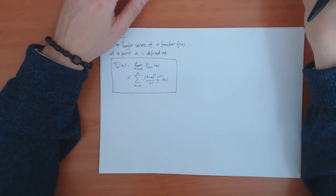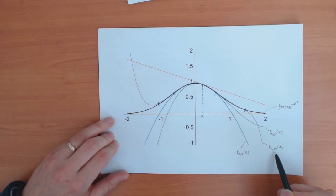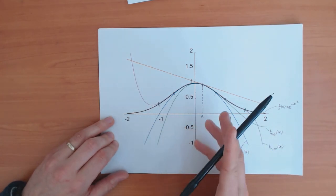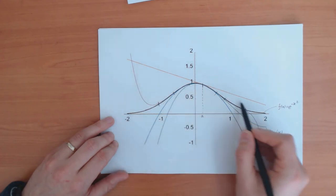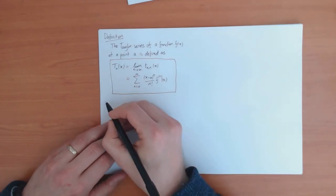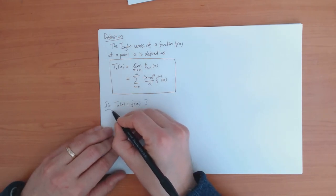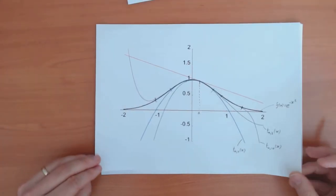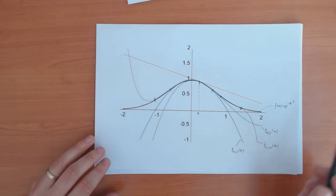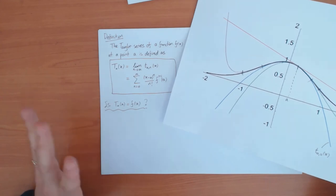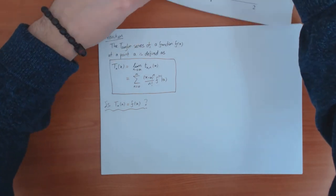Just before we finish, there's one final question I want to address. Looking at the graph, as I increase the degree of the polynomial the approximation to f gets better and better. So you can ask: in the Taylor series, in the limit that n goes to infinity, does the Taylor series become exactly equal to the function? Is T_a(x) equal to f(x)? For f(x) = e^{−x²} it turns out the answer is yes — for every point x the Taylor series equals the function exactly. However, the answer is unfortunately not always yes.